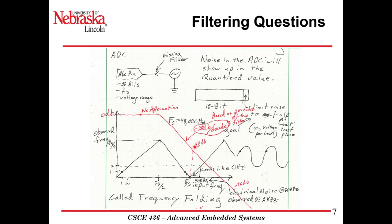So what we want to do is attenuate that signal. For a first-order filter, we're going to attenuate at minus 20 dB per decade. We're sampling at Fs over 2, and that frequency is falling off. We have roughly minus 48 dB at the sampling frequency, so our corner frequency is Fs over 2. At the sampling frequency we have minus 48 dB, and at 2Fs we have roughly minus 96 dB.